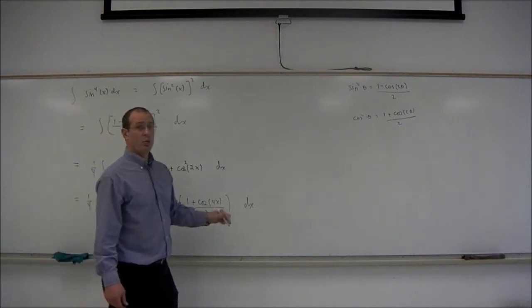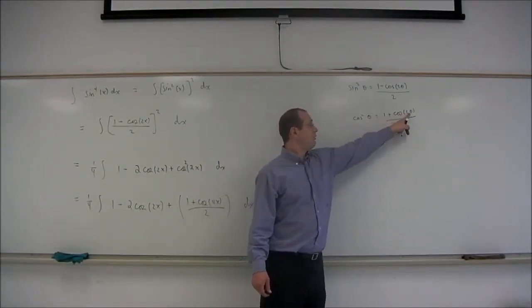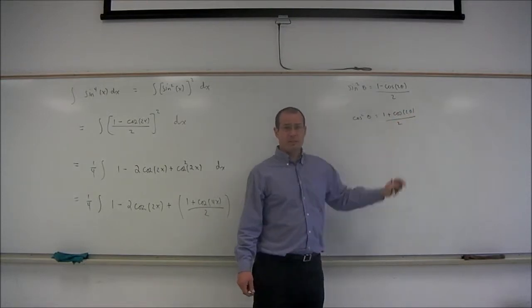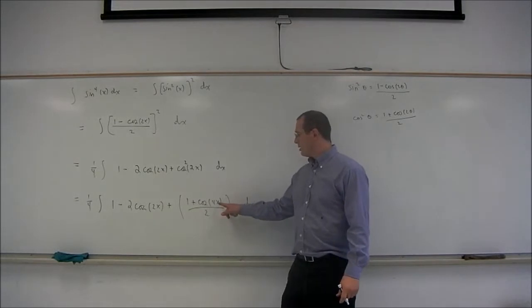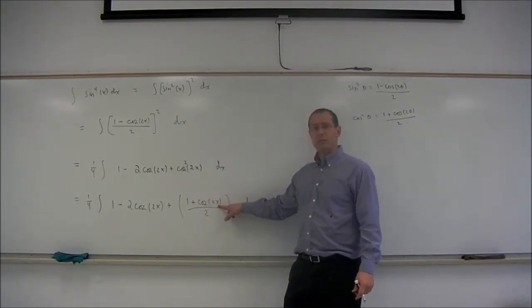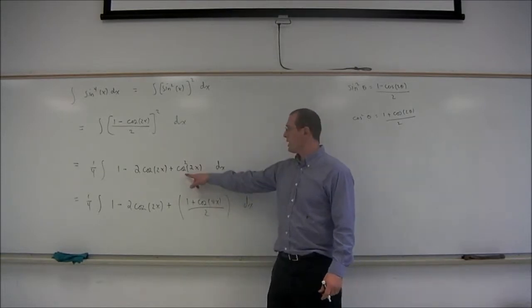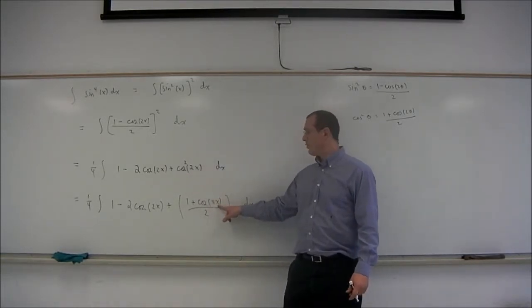Why 4x? According to the identity, whatever angle you put in here, you should have double it. So this angle was 2x, so here we should double it and put 4x. We were using the identity on cosine squared of 2x, so here we have 4x.